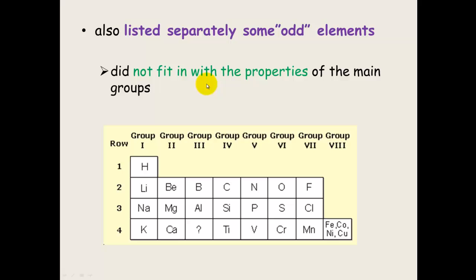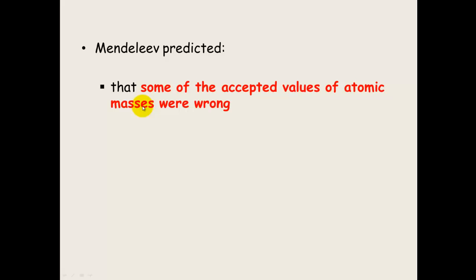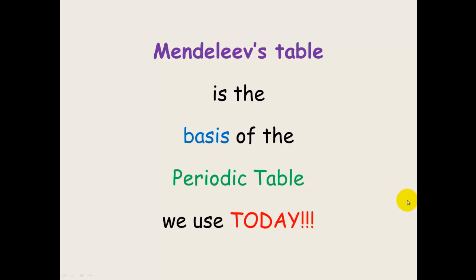What he also did he listed separately some odd elements that just didn't seem to fit in with any properties of the main groups, such as iron, cobalt, nickel and copper and put them just on the side. His periodic law stated that the properties of the elements are a periodic function of the atomic mass. In other words properties change on a regular basis with the weight of the atom. Mendeleev predicted that some of the accepted values of atomic masses were wrong. And he also predicted some of the properties of the undiscovered elements based on the structure of his periodic table. Mendeleev's table is the basis of the periodic table that we still use today.